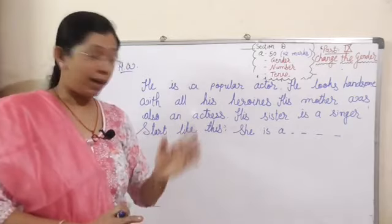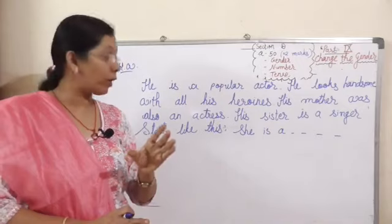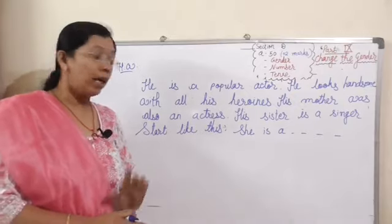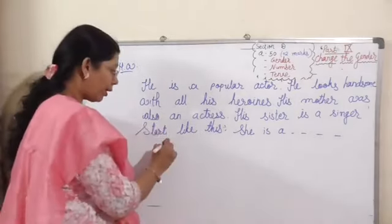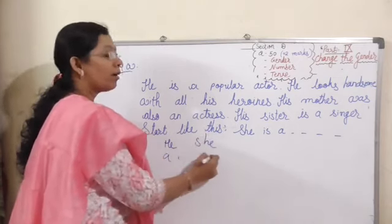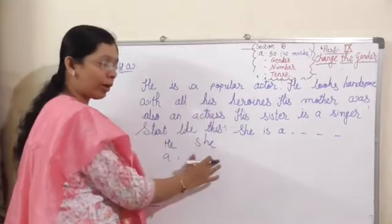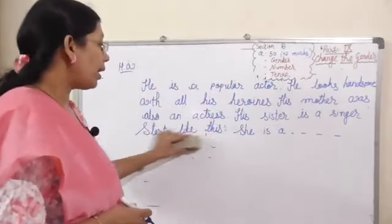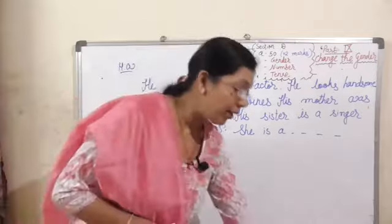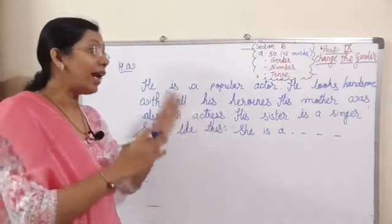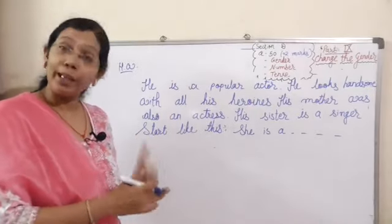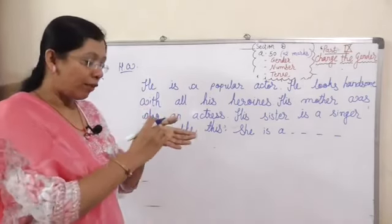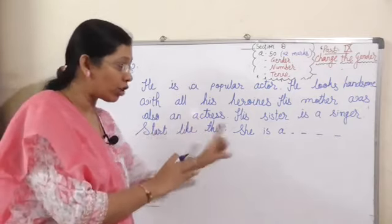It's very easy. If you want to know exactly what to change, you can rewrite the entire paragraph. Among the changes: He becomes she, actor becomes actress. We have to write the entire paragraph again with the changed words. That is the method — we rewrite the entire paragraph again.